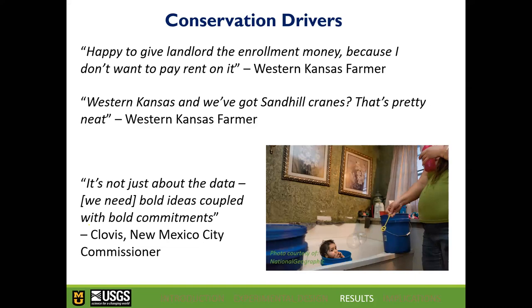A major theme from these meetings was water scarcity in the Great Plains. A Clovis, New Mexico City Commissioner said, 'It's not just about the data — we need bold ideas coupled with bold commitments.' This references a project near Clovis to shut off irrigation wells and use playas to help recharge their city water system. National Geographic did a story on Clovis — on the south side of town, some neighborhoods no longer have ample running water.